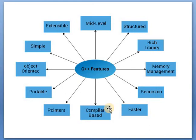Next is compiler-based. Without compilation, we cannot execute a C++ program — compilation is mandatory. After writing the program, we first have to compile it. The compiler finds errors in the program and converts the high-level program into a mid-level program. Next is pointer: a pointer is a special type of variable which stores the address of another variable. By using pointers, we can easily allocate and de-allocate memory.